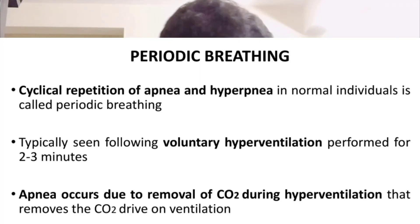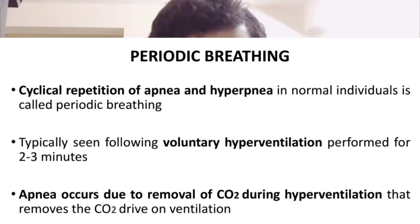This concludes the neural regulation of respiration. We covered the pontine and medullary centers, integration of all centers, applied lesion examples, and pulmonary reflexes. Abnormal breathing patterns such as periodic breathing are also part of this topic. I hope this video was helpful — thank you for watching.